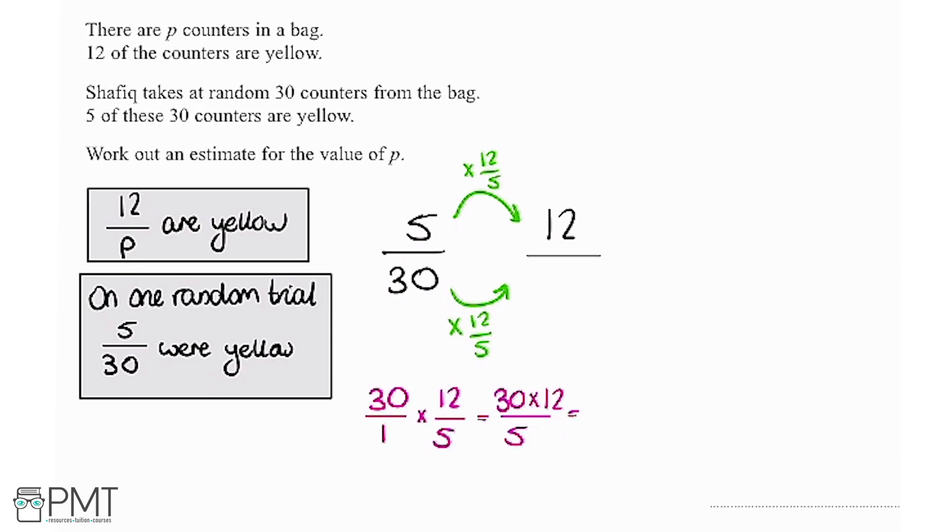I'm going to write the 30 out as 5 times 6 and then we're going to put the 12 back there as well and that all over 5. So I've replaced the 30 with 5 times 6. This now means we can cancel the 5 and the 5.